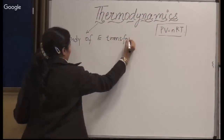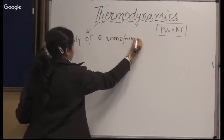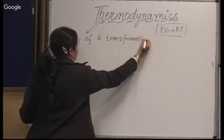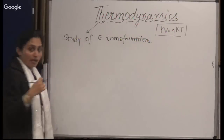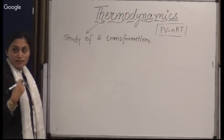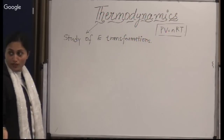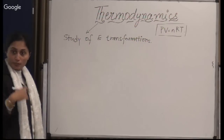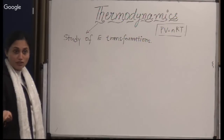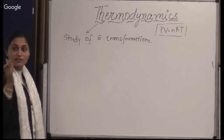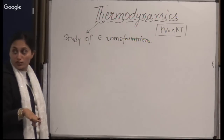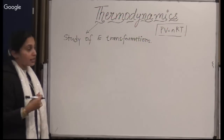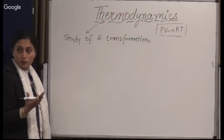For example, when you operate a cell, you know that chemical energy is being utilized to do some kind of work. The chemical energy may be converted to electrical energy, and electrical energy may be converted back to chemical energy and things like that.